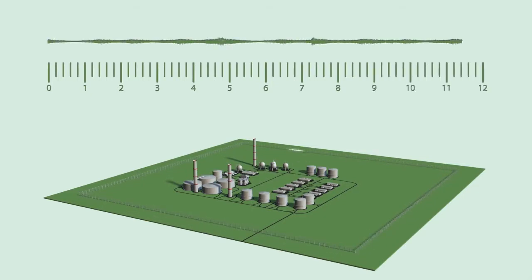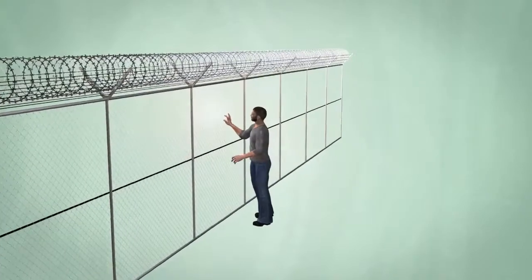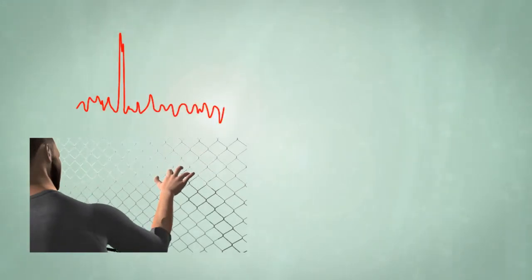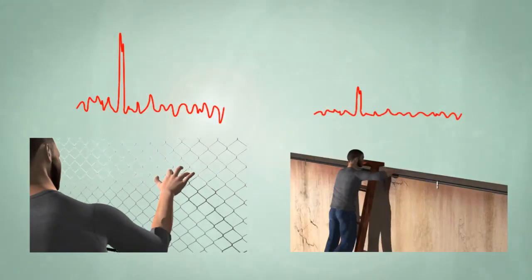When the fiber is static the display shows no spikes. An intrusion would shake a section of the fiber and a spike would show due to the change in the nature of the back-scattered energy.